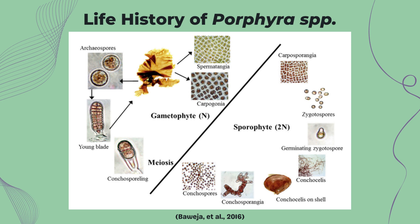For the asexual mode of reproduction, on the other hand, the vegetative cells in some species directly form spores called archaeospores, which can directly germinate to form the thallus. Recent studies also found that besides these two modes of reproduction, Porphyra also reproduces by endosporangia or endospores, which ultimately give rise to the thallus.